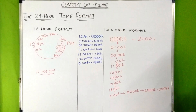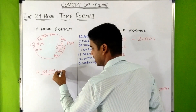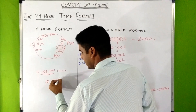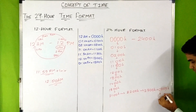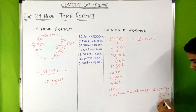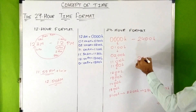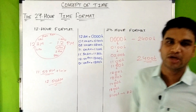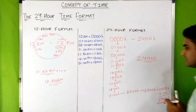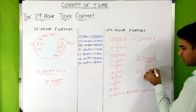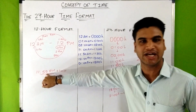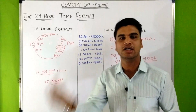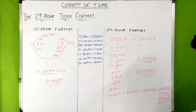2359 is read as 'twenty-three fifty-nine hours'. Just after one minute — adding one minute to 2359 — in the 12-hour format this becomes 12 AM. In 24-hour format, adding one minute gives 2400, but 2400 is not the standard format to write. So it is written as 0000 hours, and a new day starts — the date changes. Similarly in 12-hour format, after adding one minute to 11:59 PM it becomes 12 AM and the date changes.